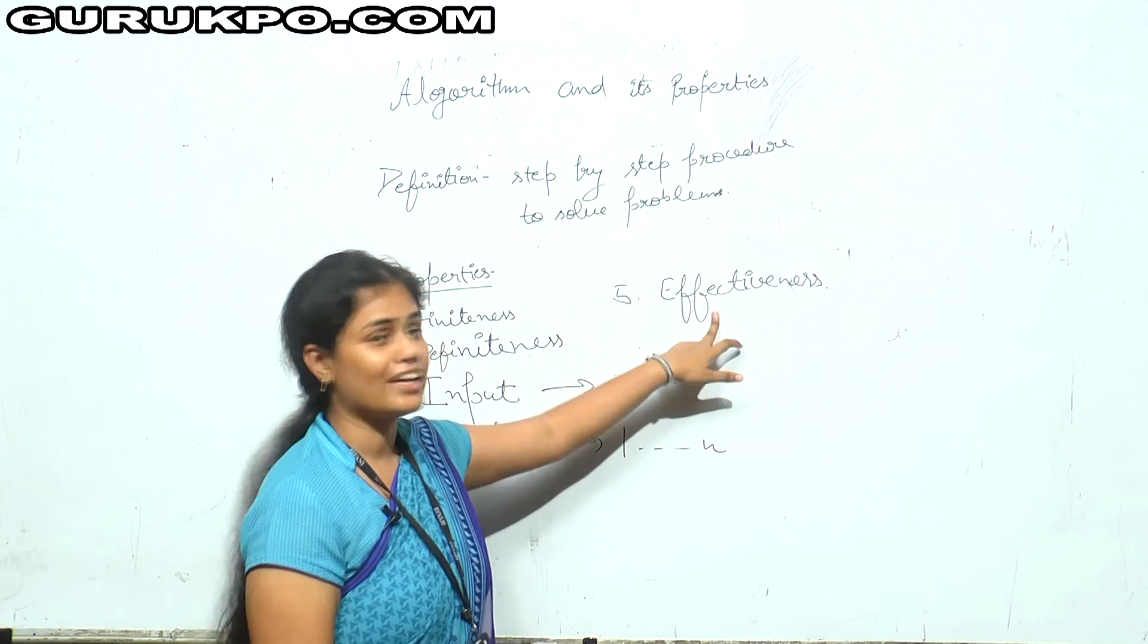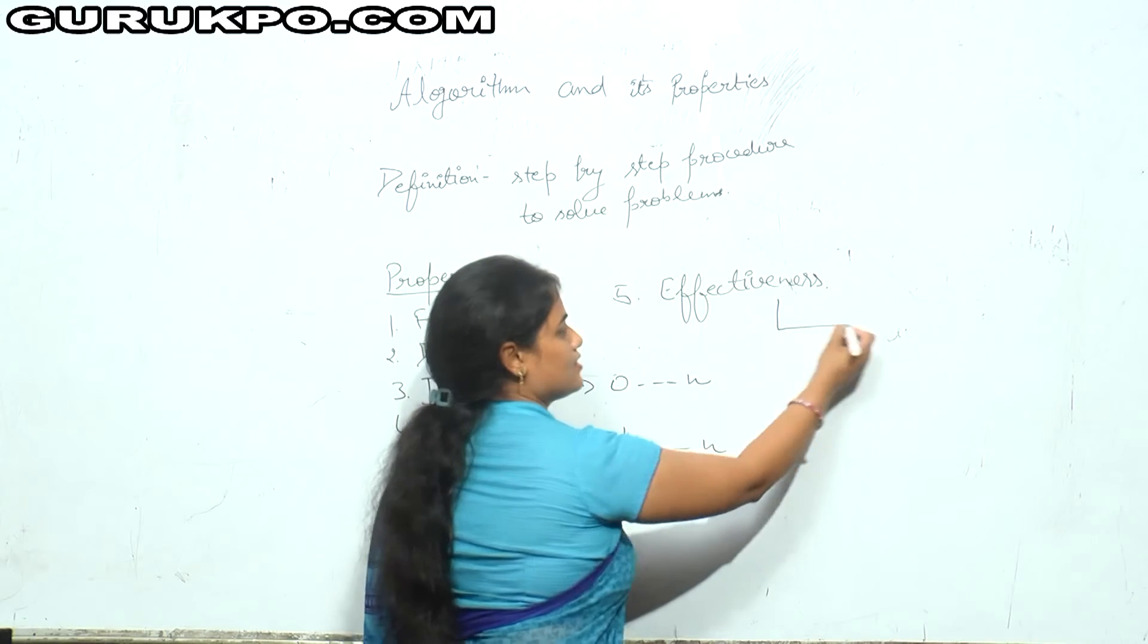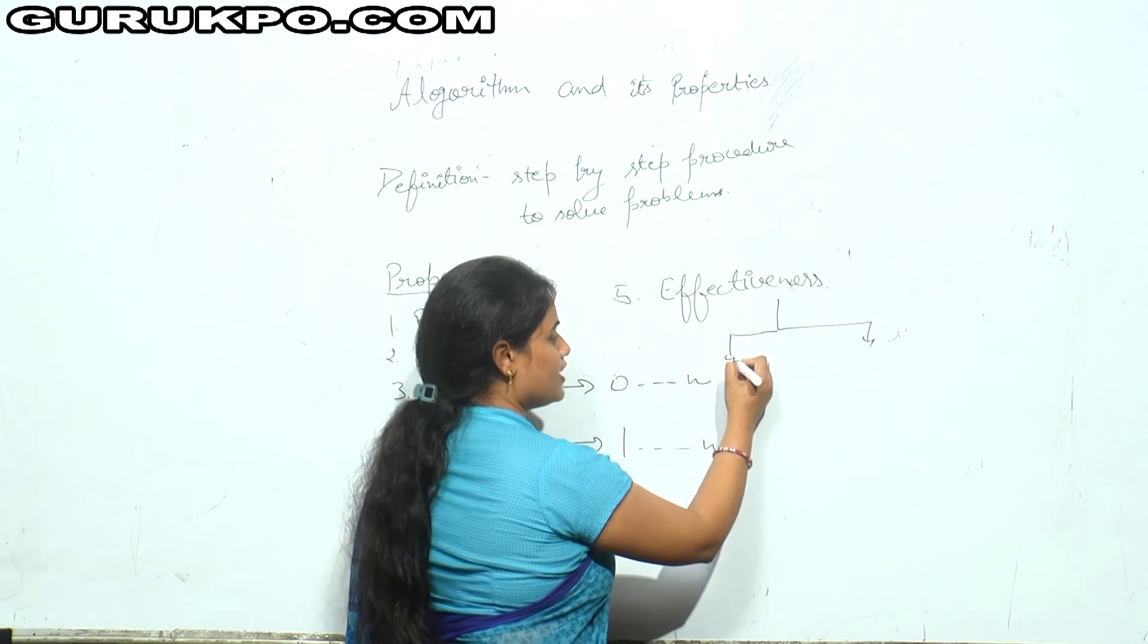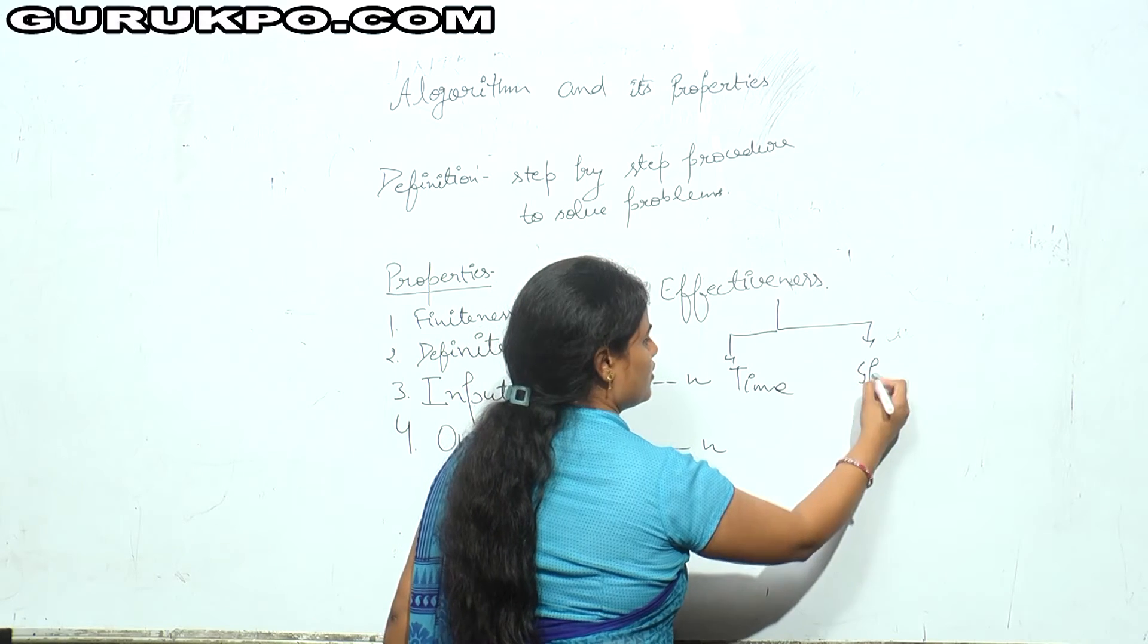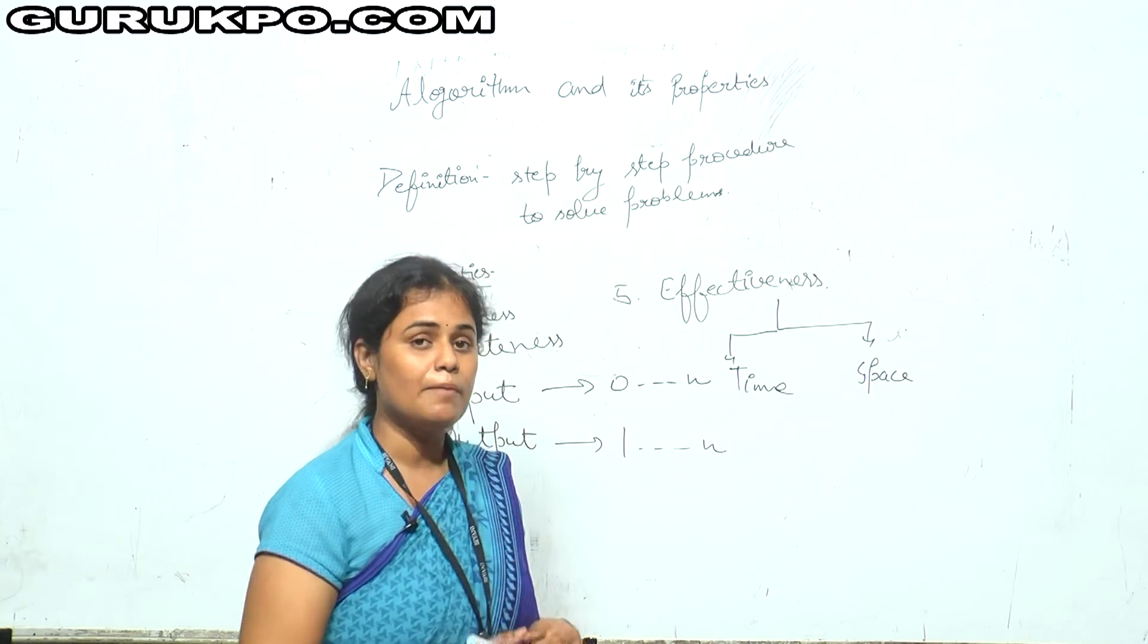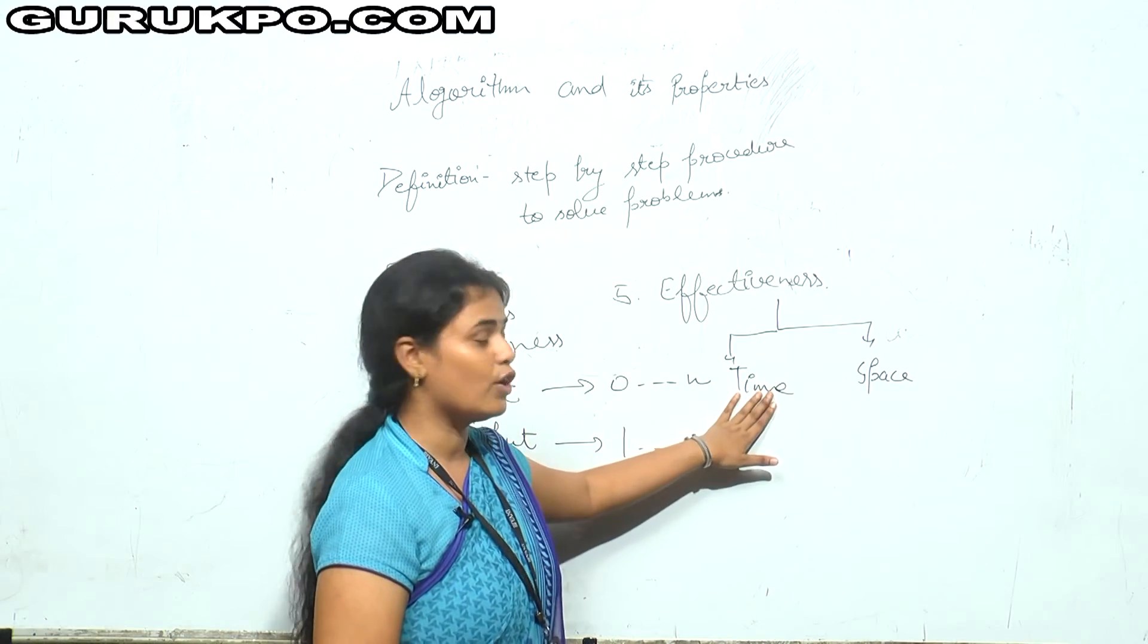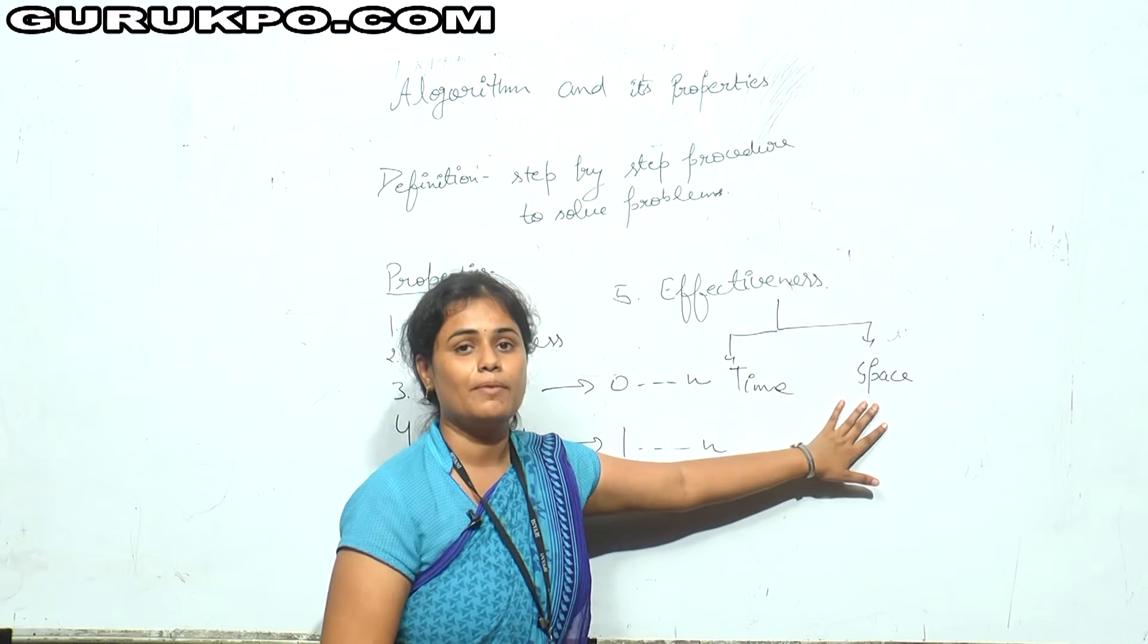Now, last property is effectiveness. Effectiveness is measured in terms of time and space. Effectiveness means complexity which can be considered in terms of time and space. Time means time taken by the algorithm to execute and space means memory required by the program.